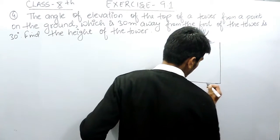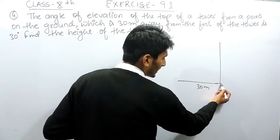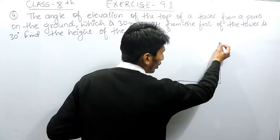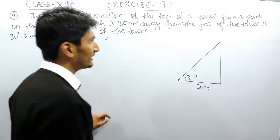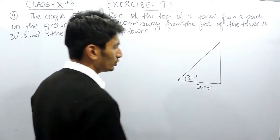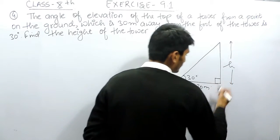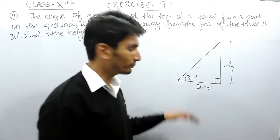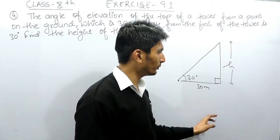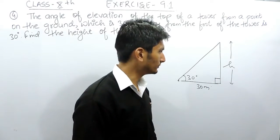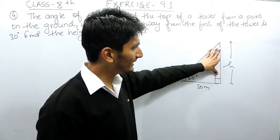The angle of elevation from this point to the top of this tower is given to you as 30 degrees. You have to find the height of the tower. This tower must be vertical to the ground, meaning it must be perpendicular, or you can say this vertical pole must form 90 degrees with the ground.